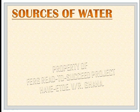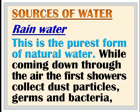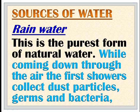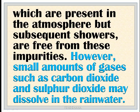Sources of water. Rainwater: This is the purest form of natural water. While coming down through the air, the first showers collect dust particles, germs and bacteria which are present in the atmosphere, but subsequent showers are free from these impurities. However, small amounts of gases such as carbon dioxide and sulfur dioxide may dissolve in the rainwater.